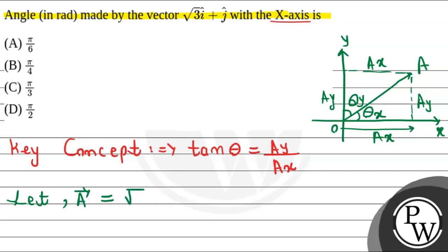Our vector is √3 î + ĵ. Now we compare this with the general form of the equation: A = ax î + ay ĵ. On comparing, we get ax = √3 and ay = 1.